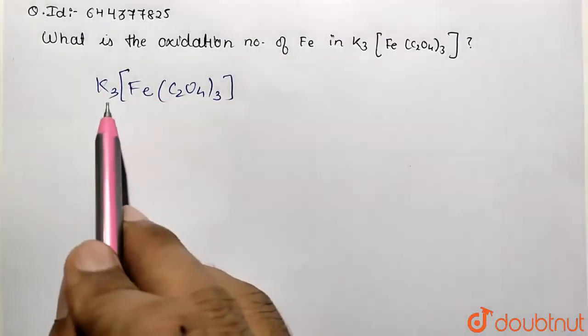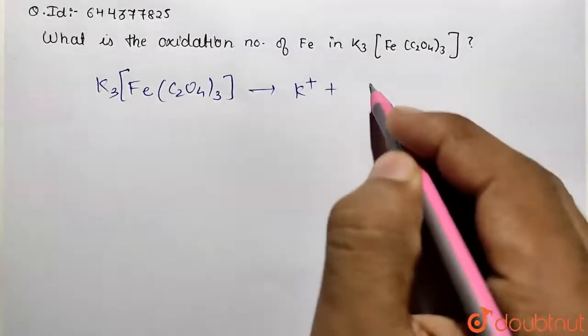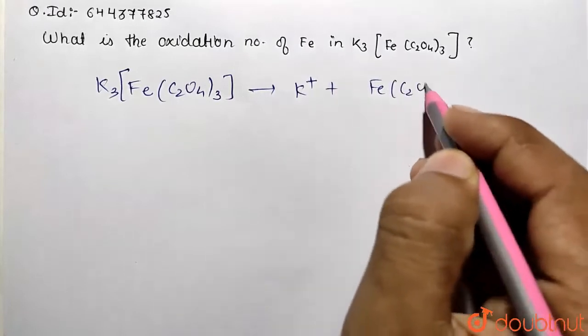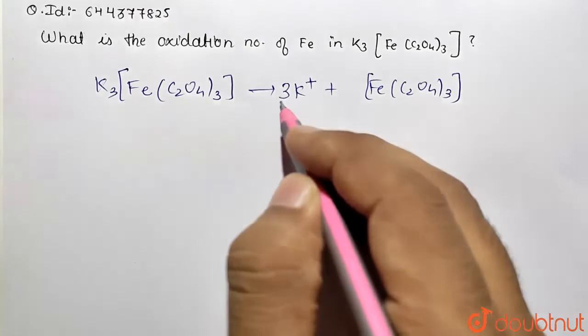with potassium metal. So this is the given complex. Let me first ionize this. It's going to give K⁺ and Fe(C₂O₄) thrice. If I balance them, this is going to be thrice, and it is overall thrice negative.